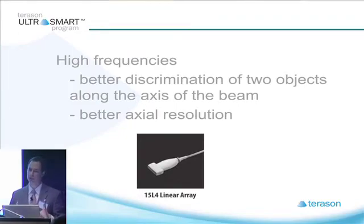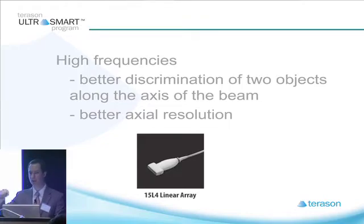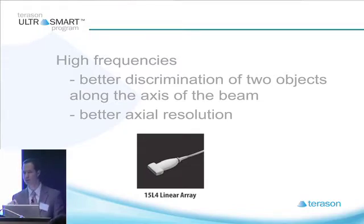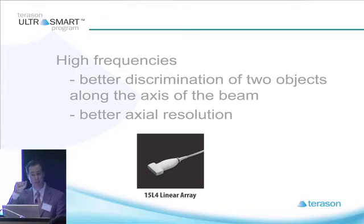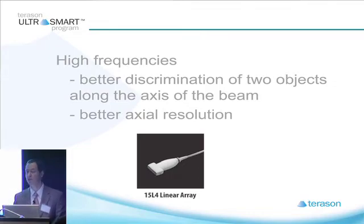Your linear arrays are going to be your higher frequencies. Higher frequencies attenuate more, so they don't penetrate through deep tissue very well and don't penetrate through things that are very dense. But they're very good at discriminating between two objects along the axis of the beam, improving your axial resolution — a type of spatial resolution — which discriminates between two very small structures and is particularly good with superficial structures. Choose your linear array when you need better resolution, but be aware that if you have something particularly deep, you may have an attenuated signal.